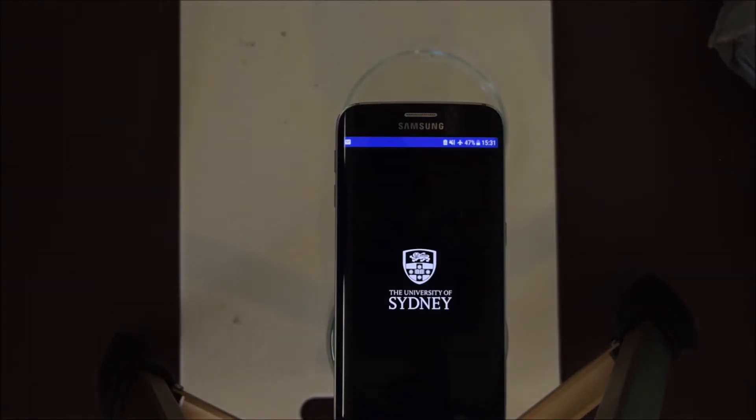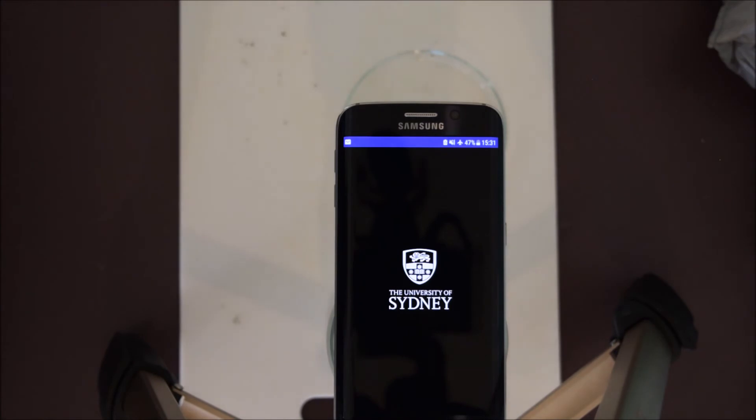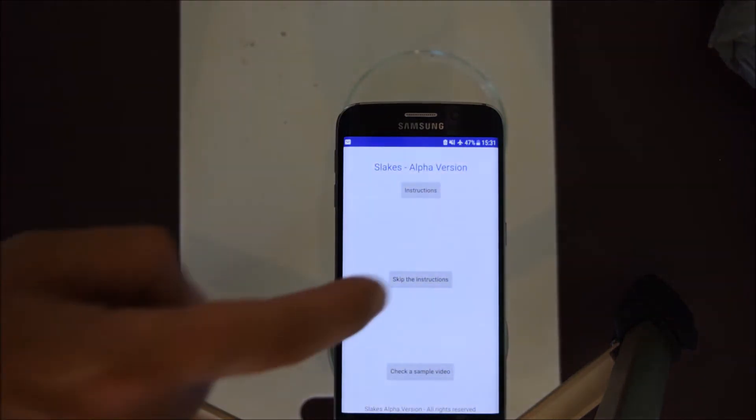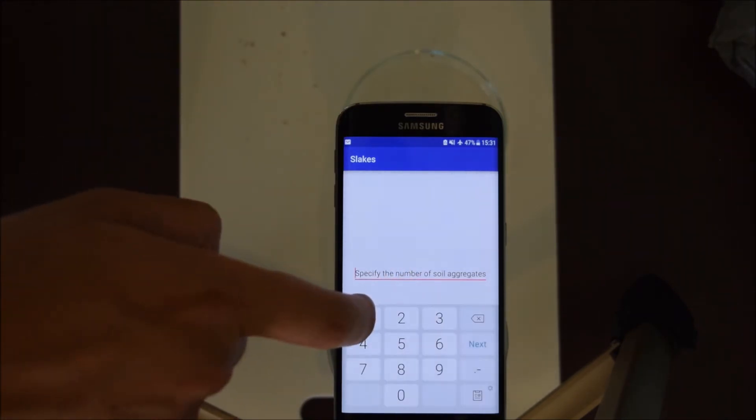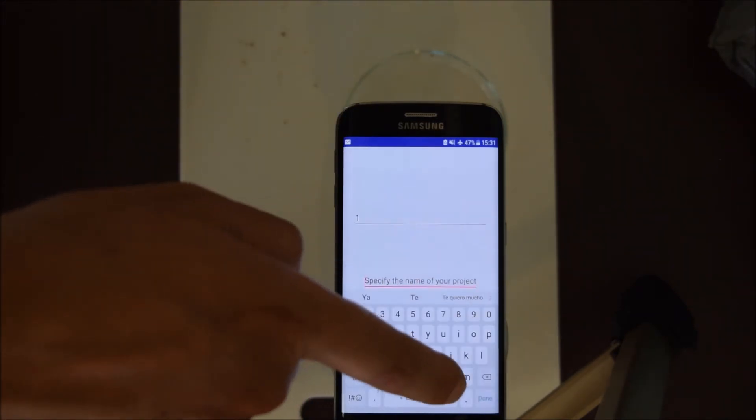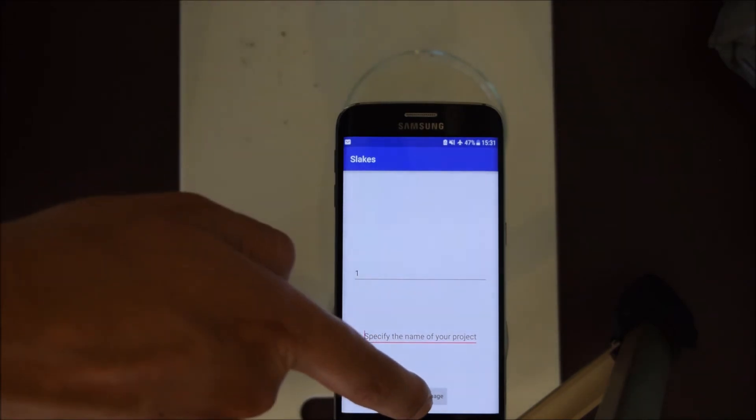The interface of the app is very simple. We only need to tell the program how many soil aggregates will be involved in the test. In this case, we're going to enter one. We can also name the project, or we just can skip this part.